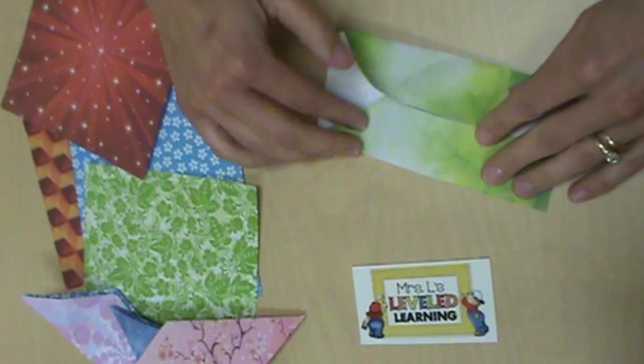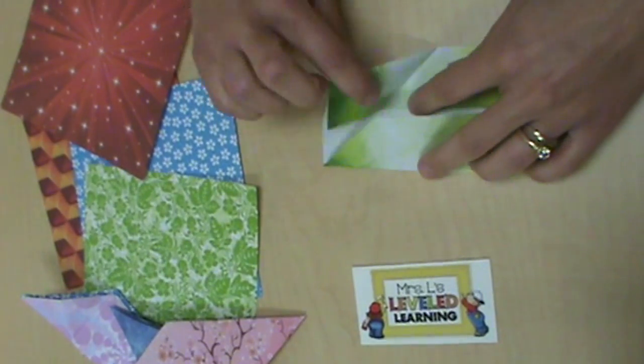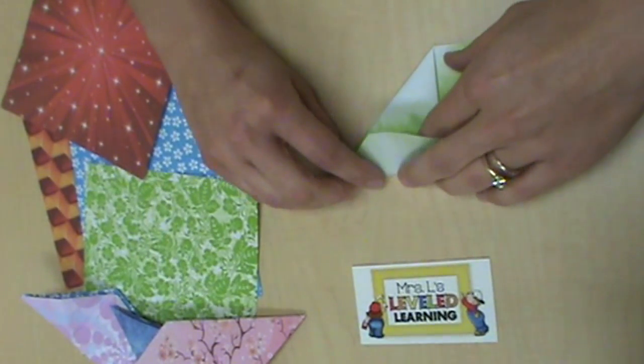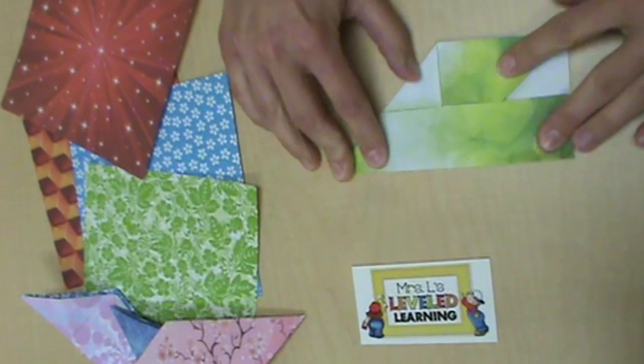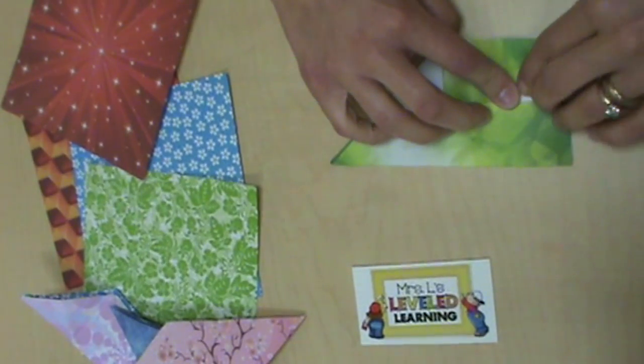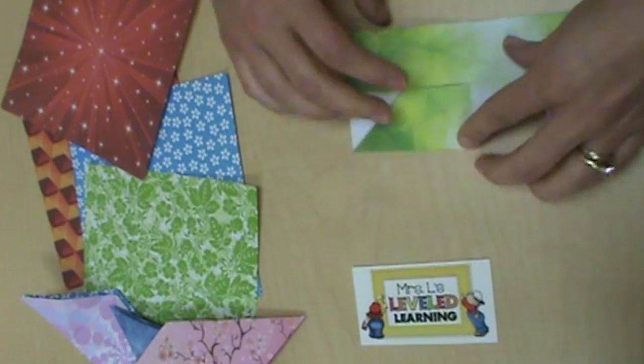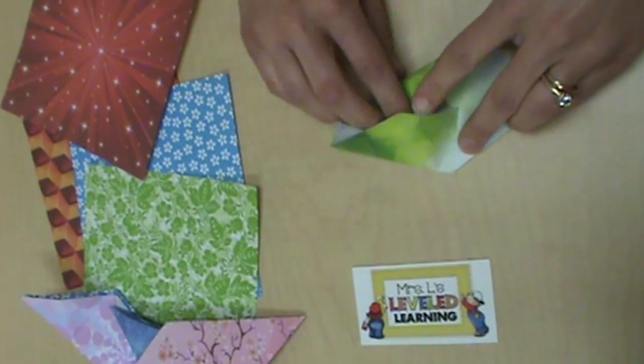Unfold it, and you want to tuck in those little corners you just made with the fold lines. And then tuck in the larger triangle into the long, rectangular flap.